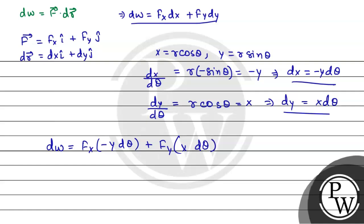From here we will have dw equals x fy minus y fx into d theta. From here, dw equals tau d theta. And this is the required expression for torque in Cartesian coordinates.